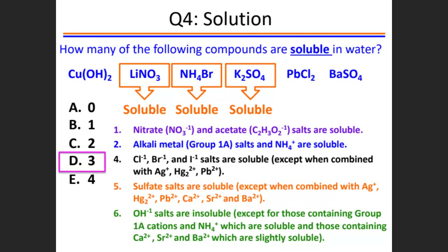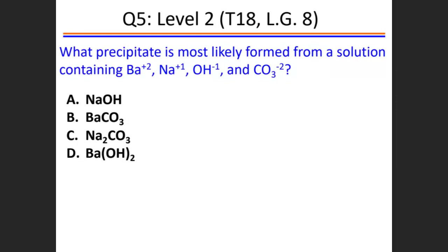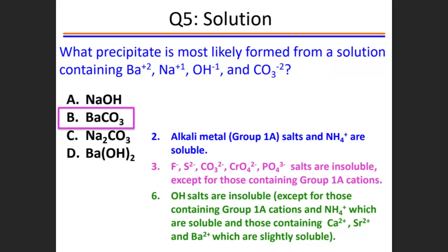For example, silver chloride always gives a white precipitate, and lead iodide always gives a yellow precipitate. There are very exact materials for which this applies. Let's see the reaction shown. Identify the product of the following reaction. The barium will replace potassium, and nitrate will combine with potassium. So the products will be barium chromate and potassium nitrate.